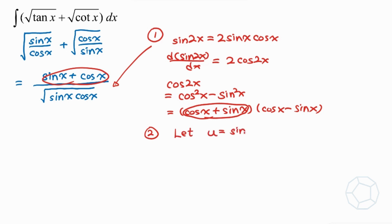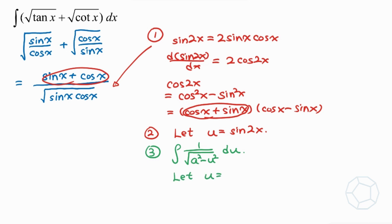The first part of the solution will be to express the integral in terms of sine 2x and cosine 2x. Next, we will use the substitution u equals sine 2x to change the integral from x to u. Finally, we will obtain the form: integral of one over square root of (a squared minus u squared) du, and we can apply the substitution u equals a sine theta. That's the outline of the thinking process — let's jump to the detailed solutions.